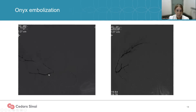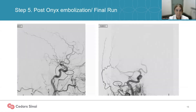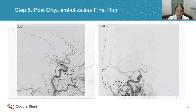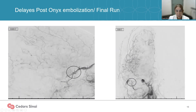You can see the Onyx embolization cast with good distal penetration. On the post-Onyx embolization run, the middle meningeal artery is still filling proximally. You can see the petrosal branches, which are deliberately avoided, and the sphenoidal branches on the delayed run. On the delayed run, you can see the origin of the posterior parietal branch embolized, the frontal branch embolized, and continued filling of the sphenoidal branches — confirmed on the AP view as well, where both the posterior parietal and frontal branches are now fully embolized.